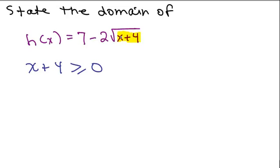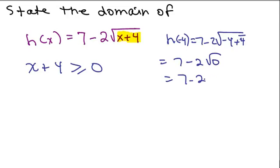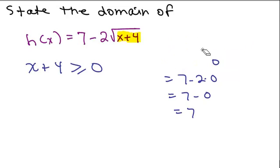So if we plugged in a number for x like negative 4, we'd have the square root of 0. Back here, let's just do it real quickly. What happens when I plug in negative 4? That's 7 minus 2 times the square root of negative 4 plus 4. That would give you 7 minus 2 square roots of 0. Square root of 0 is 0. 7 minus 0 is 7. So yeah, when I plug in negative 4, I do get a real number. So it's okay to be 0 what's underneath the square root.